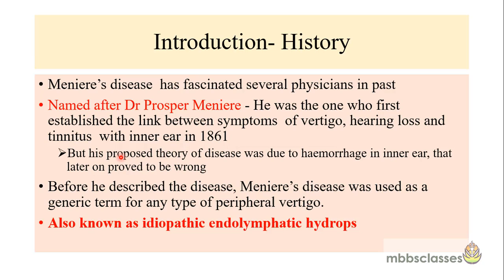His proposed theory was that the disease was due to hemorrhage in the inner ear. But later on, it proved to be wrong. After many years of research by various scientists, the symptom of this disease was found to be due to endolymphatic hydrops. This disease nowadays is also known as idiopathic endolymphatic hydrops — meaning when the etiology of the endolymphatic hydrops is not known, only then it is labeled as Meniere's disease. Endolymphatic hydrops can also occur due to other diseases, and in that case it is not Meniere's.